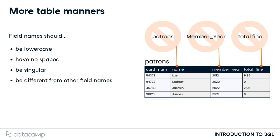This is why our table has cardnum and name fields rather than cardnums and names. Similarly, two fields in a table cannot have the same name. Finally, field names should never share a name with the table they are housed in, so that it's clear in all cases whether a field or table is being referred to.